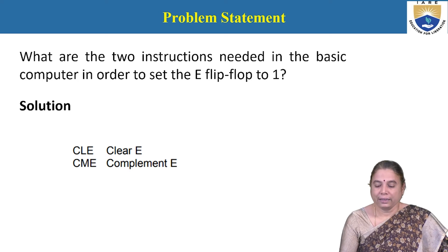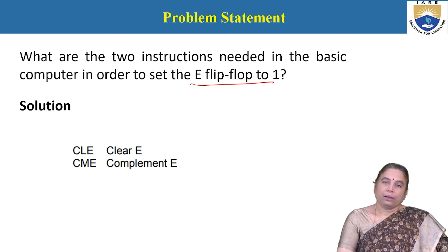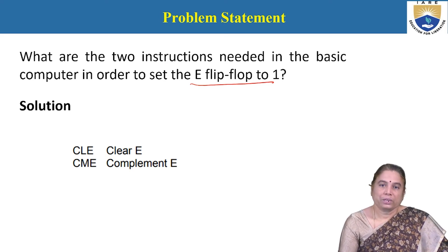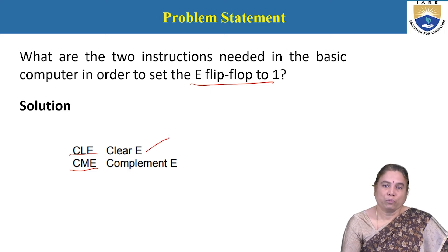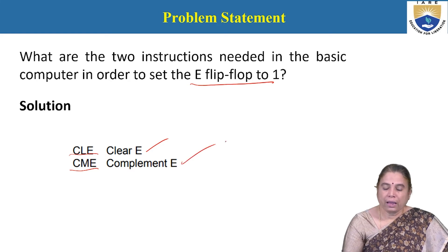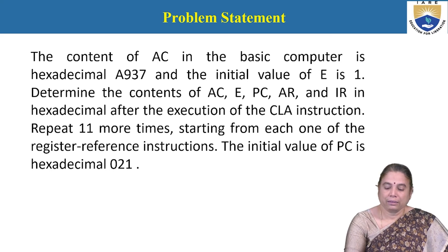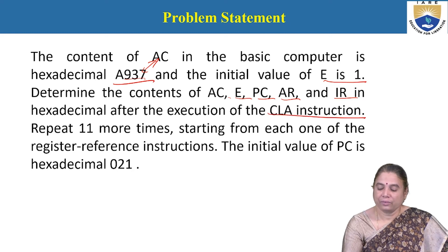What are the two instructions needed in the basic computer to set the E flip-flop to 1? If any extra bit is generated during an arithmetic operation, the E flip-flop is activated to 1. Two instructions operate on the E flip-flop: CLE (Clear E) sets E to 0, and CME (Complement E) takes the one's complement of the current E value. To set E to 1 from 0, execute CLE then CME.